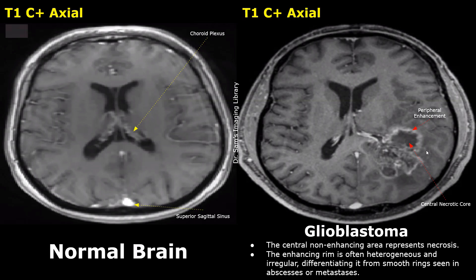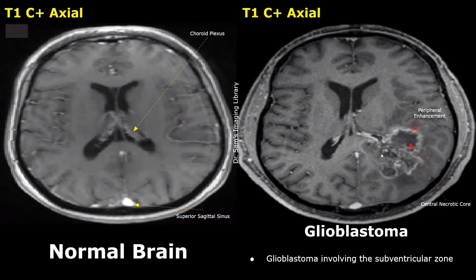In this T1 contrast image, an irregular-shaped heterogeneous mass is present. Apart from the irregular shape and heterogeneity, a glioblastoma will have two distinct features in a T1 contrast image: the mass will have a bright enhancing peripheral rim and a hypo-intense dark central necrotic core. The enhancing rim is often heterogeneous and irregular, differentiating it from smooth rings seen in abscesses or metastases. This glioblastoma involves the subventricular zone, and its irregular and heterogeneous appearance indicates that it is a malignant infiltrating lesion.